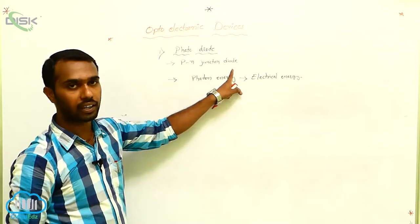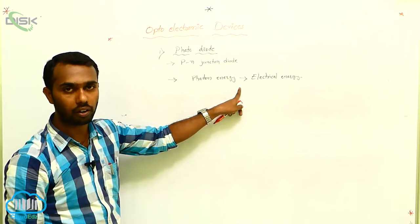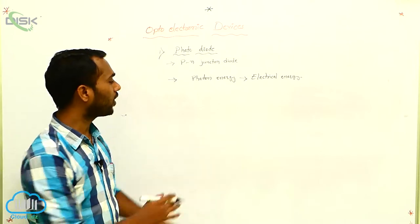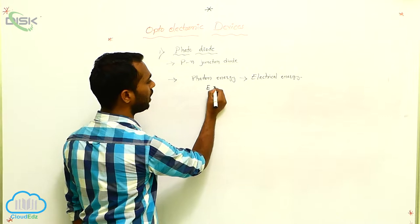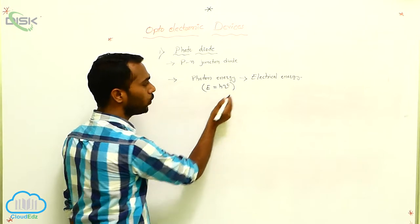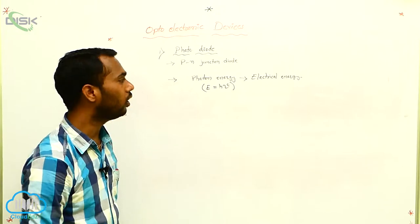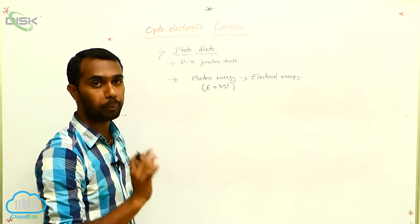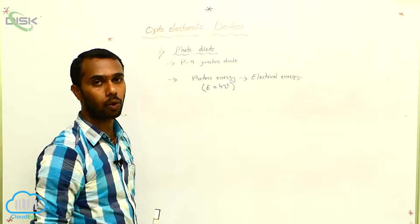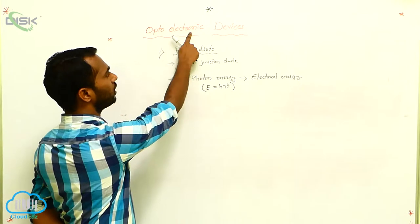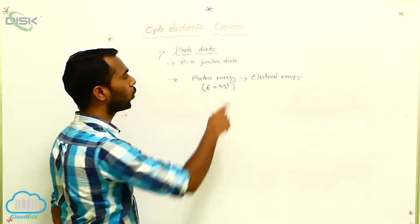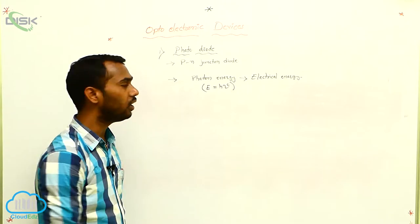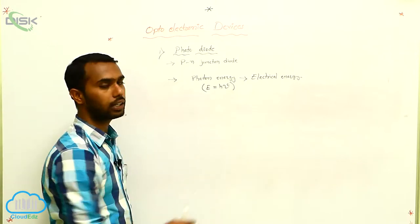If you take a P-N junction diode, when you allow a photon on that, automatically current produces — that is a photodiode. Photon energy E equals H nu. If H nu energy falls on a P-N junction diode, current produces. That's why this is an optoelectronic device — opto means optical energy, electronic means current. It converts optical energy into current.